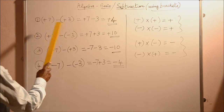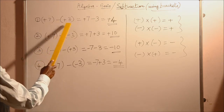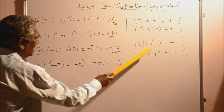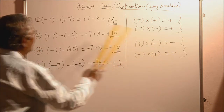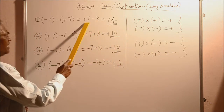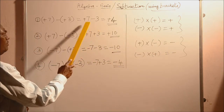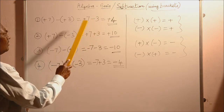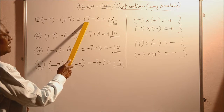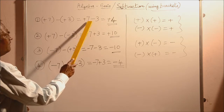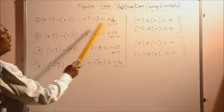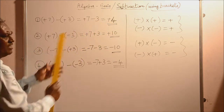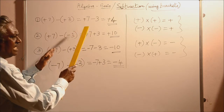So here, plus 7 minus of plus 3. That is minus into plus, which gives minus. Therefore, I am writing minus 3. So we have plus 7 minus 3. When you add these, you have got different signs, so the bigger number has the sign plus. The difference between 7 and 3 is 4, therefore we write plus 4.